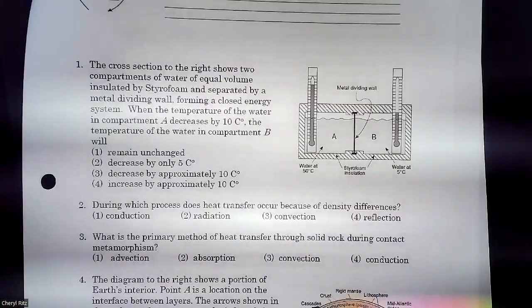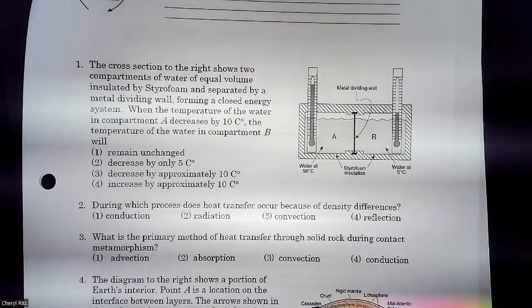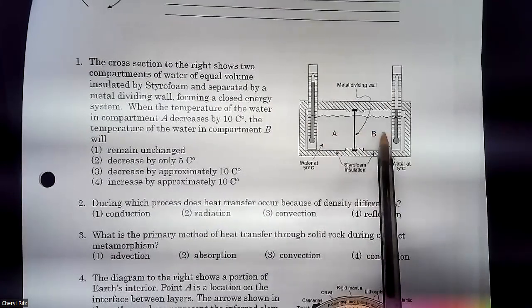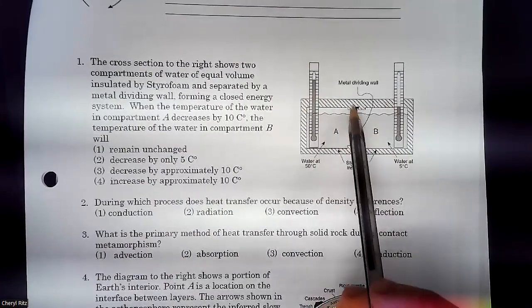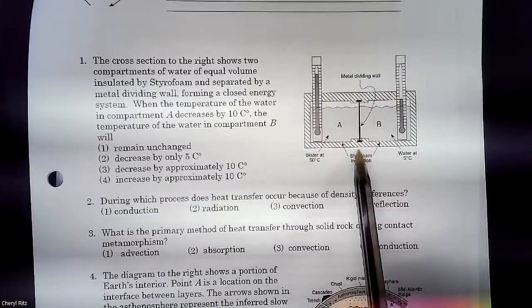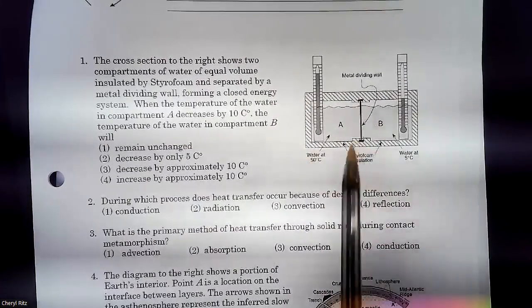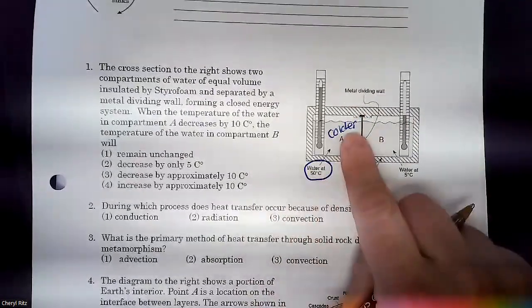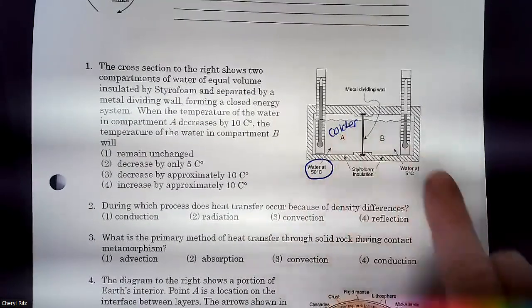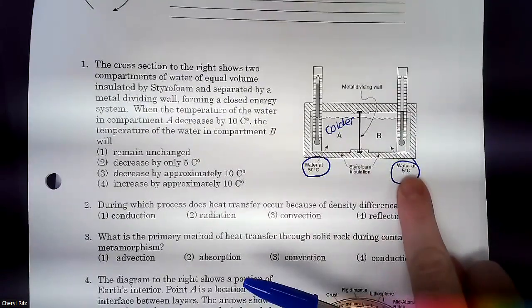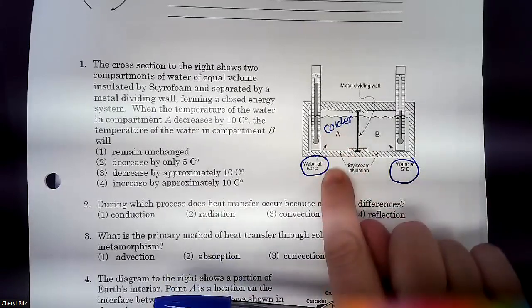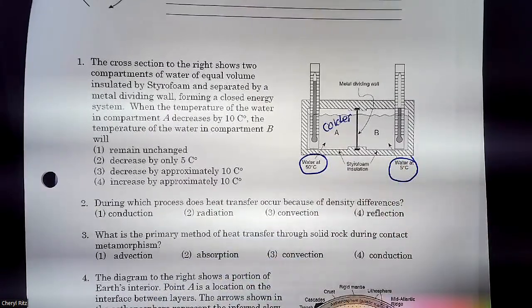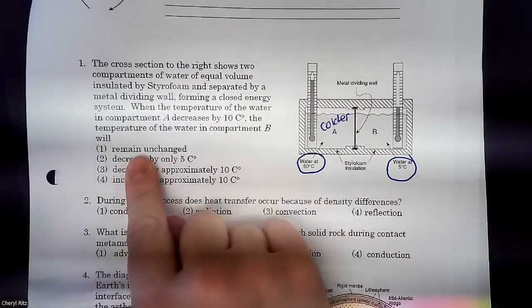This page. This one required some reading. And I know a lot of you skip reading. But if you skipped reading, you would have no idea what's going on in this experiment. The cross section to the right shows two compartments of water of equal volume, insulated by styrofoam, dividing wall, separated by a metal dividing wall, formed a closed energy system. When the temperature from the water in compartment A decreased, so A is going to get colder, even though A is already 50, the experiment says that temperature decreased by 10. What's going to happen to the water in B, which starts off at 5 degrees Celsius? Will it stay the same? No.